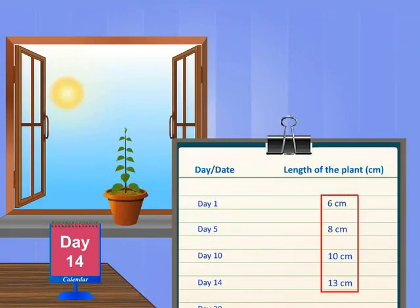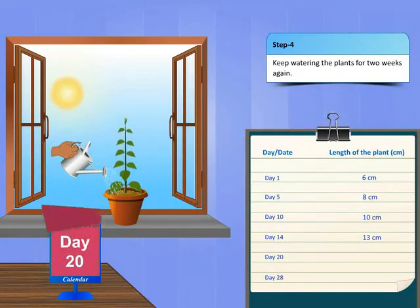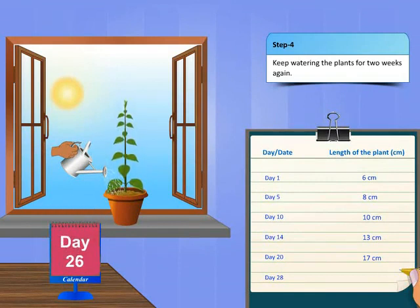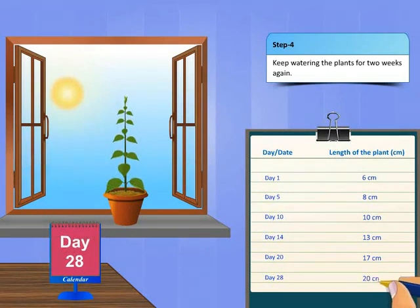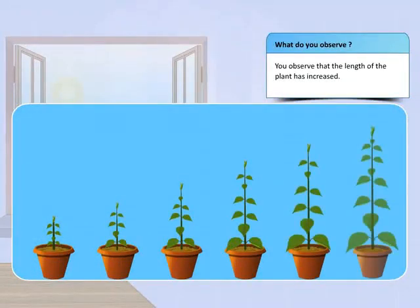Keep watering the plant for two more weeks and note down the length of the plant on the same paper. What do you observe? You'll observe that the length of the plant has further increased.